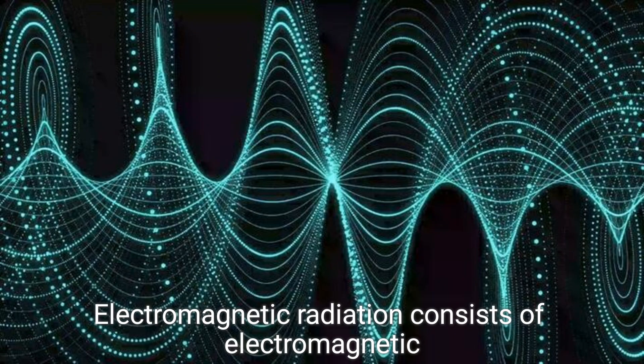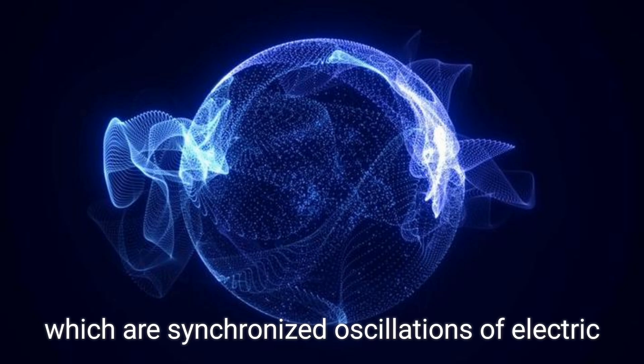Electromagnetic radiation consists of electromagnetic waves, which are synchronized oscillations of electric and magnetic fields.